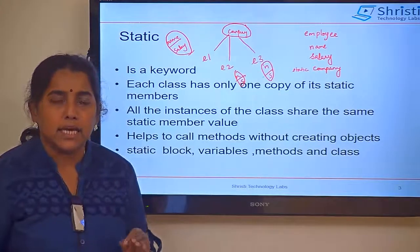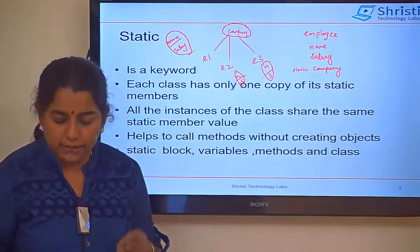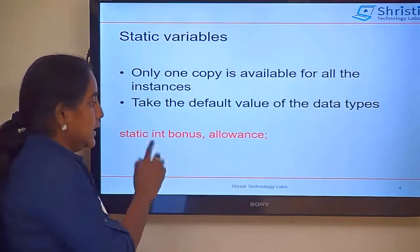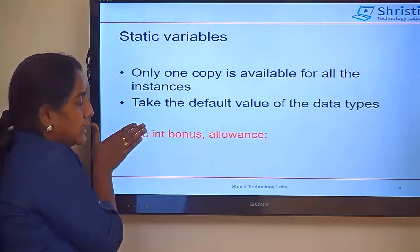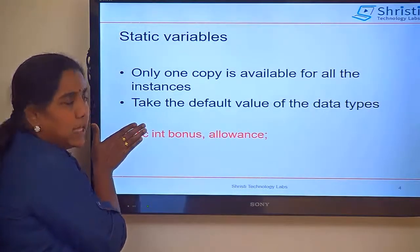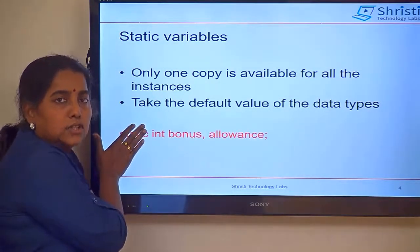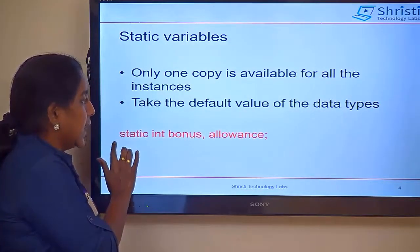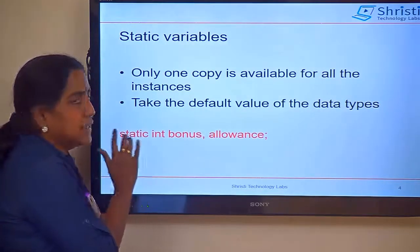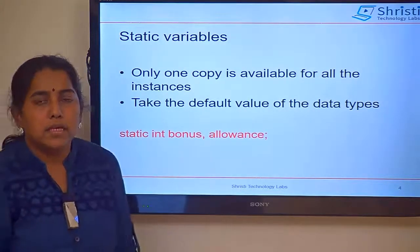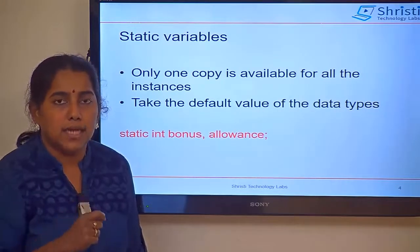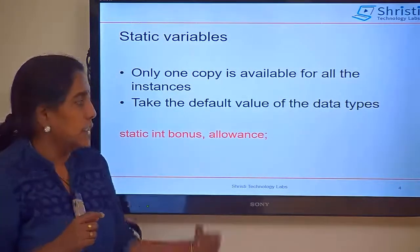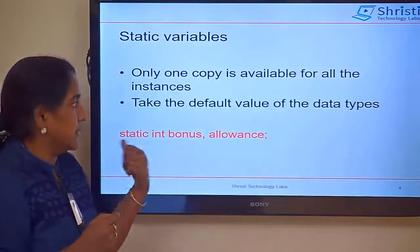Let us understand how to create a static variable. These are the instance variables I have: int, bonus, and allowance. If I want these to be shared by all the objects, I have to use the static keyword. The static variables also take the default value of that particular data type — in this case, it is going to be 0.